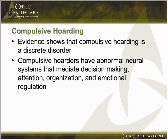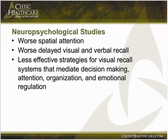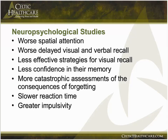Compulsive hoarding is a discrete disorder with a genetically distinct and strongly heritable phenotype. Neuroimaging and neuropsych studies show it is distinct from obsessive-compulsive disorder. There is dysfunction of the DACC — the dorsal anterior cingulate cortex — and other brain areas. When compulsive hoarders undergo a full series of psychological studies, findings include worse spatial attention, worse visual and verbal recall, less effective strategies for visual recall, less confidence in memory, more catastrophic assessments of the consequences of forgetting, slower reaction times, and greater impulsivity.